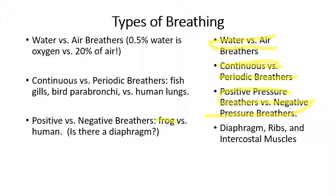Versus humans — our lungs are surrounded by ribs. If we pull the ribs upward with the help of the intercostal muscles and also pull the rib cage downwards at the bottom with the help of the diaphragm, that has the effect of increasing the size of the lungs and thus pulling air in.